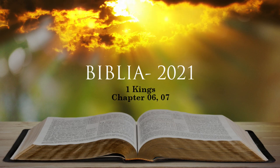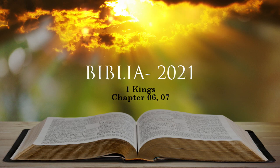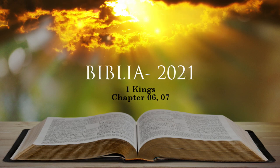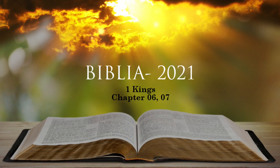Solomon also made a palace like this hall for Pharaoh's daughter, whom he had married. All these structures, from the outside to the great courtyard and from foundation to eaves, were made of blocks of high-grade stone cut to size and smoothed on their inner and outer faces. The foundations were laid with large stones of good quality, some measuring ten cubits and some eight. Above were high-grade stones cut to size and cedar beams. The great courtyard was surrounded by a wall of three courses of dressed stone and one course of trimmed cedar beams, as was the inner courtyard of the temple of the Lord with its portico.